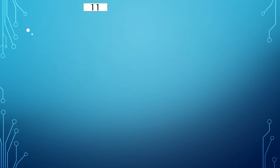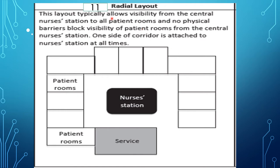The eleventh type is the radial layout. This allows visibility from the central nurse's station to all patient rooms — no physical barriers block visibility. One side of the corridor is attached to the nurse's station at all times, with patient rooms arranged around the central station. You can mention any four of these shapes in your examination answer.